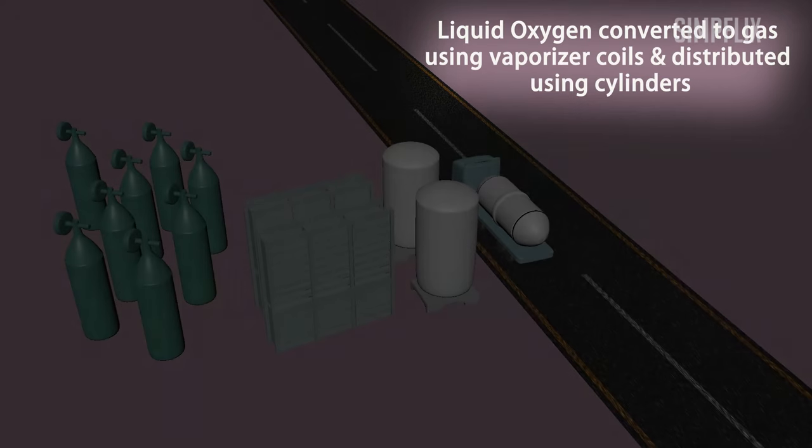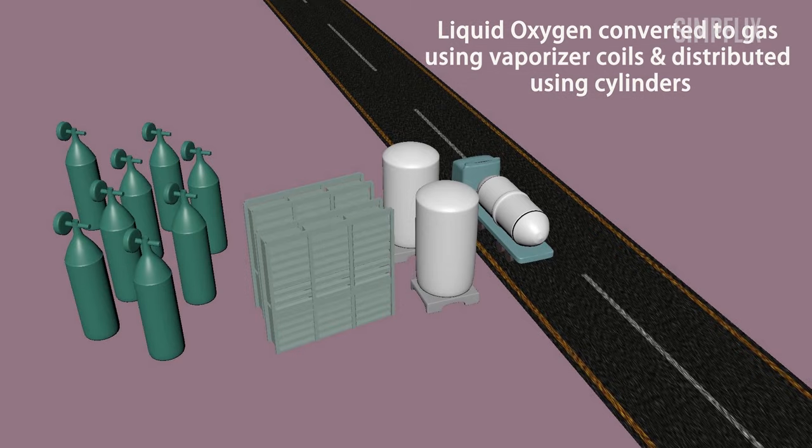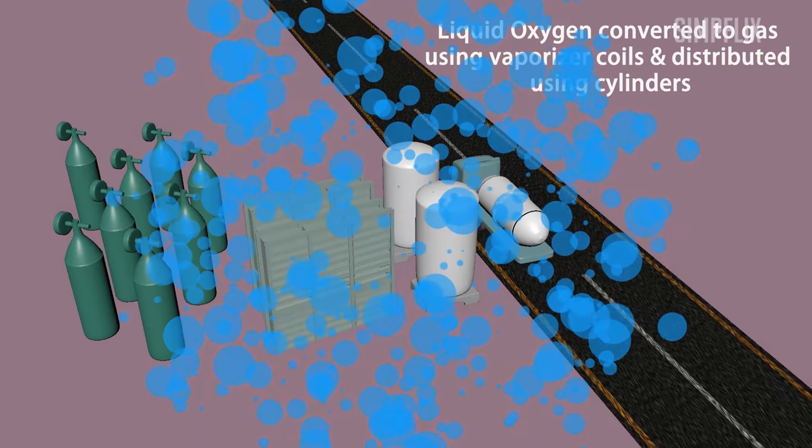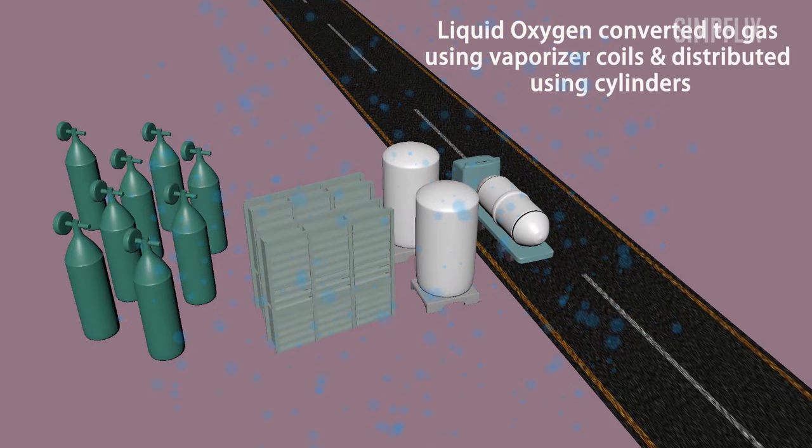This gaseous oxygen can be filled in cylinders for distribution to end users. Remember, the advantage of transportation in liquid mode is 1 meter cube of liquid oxygen can be converted to gaseous oxygen of 700 meter cube.